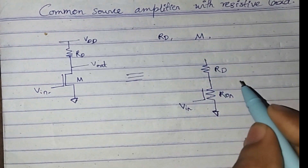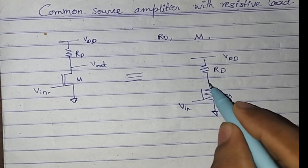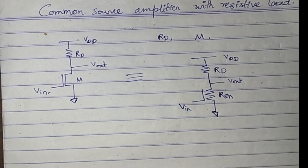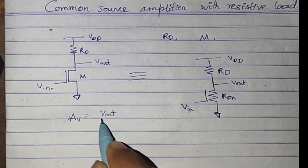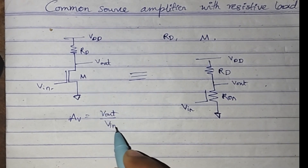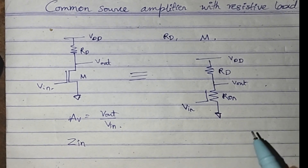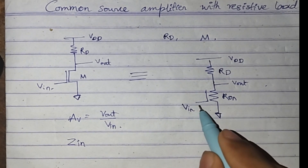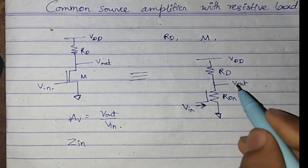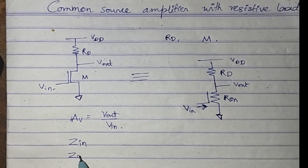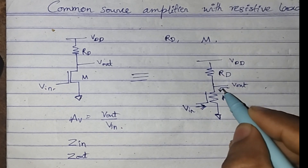This is how we can model the CS amplifier, and this is V_out. In this circuit we are going to calculate the gain, that is the output voltage divided by the input voltage, the input impedance offered by this circuit at the input end, and also the output impedance at the output terminal.